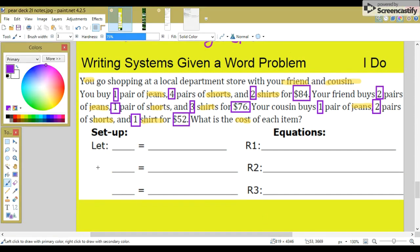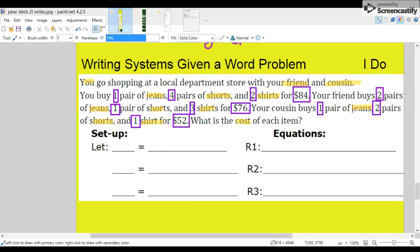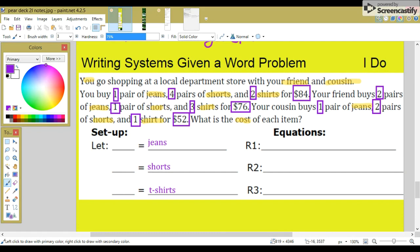Now, using these, we have three things that we're talking about. We're talking about jeans, shorts, and shirts. So, for the variables, you can call many letters you want. X, Y, Z. Let's go ahead and call them J, S, and T.